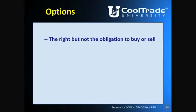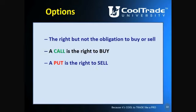An option is the right to buy or the right to sell — it's a right but not an obligation. There are two types of options. One is a call. A call is the right to buy. If you think a stock is going to go up, you can buy the stock or you can buy a call, which is the right to buy the stock in the future.